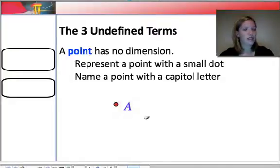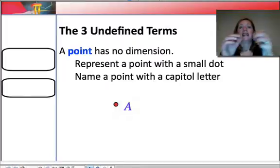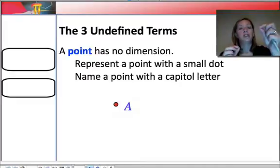Okay, so there's three undefined terms in geometry. And the first one is a point. And if you think about a point, the reason why a point is called one of the undefined terms is it's really hard to define precisely. We could say the tip of my pen is like a point, but where exactly is that point?